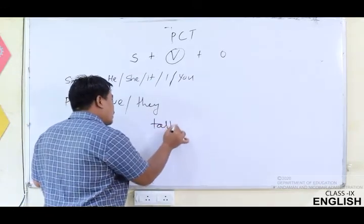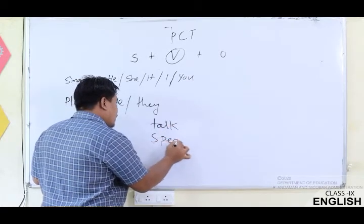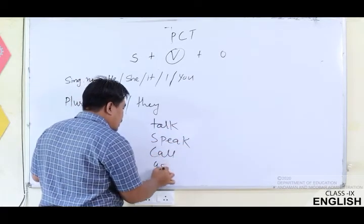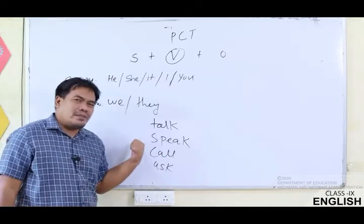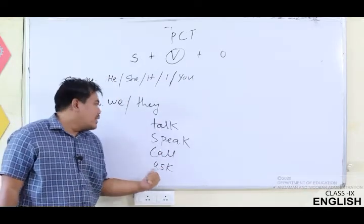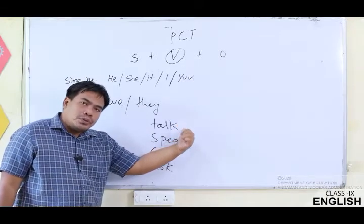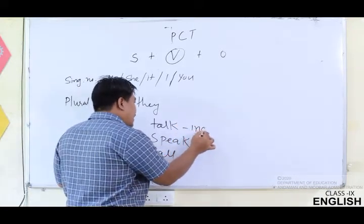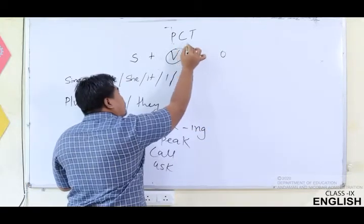Examples of verbs include: talk, speak, call, ask — there are so many words that are verbs. So in present continuous tense you will have to add -ing to those verbs. Remember, this is the second tense which we are learning at the moment.